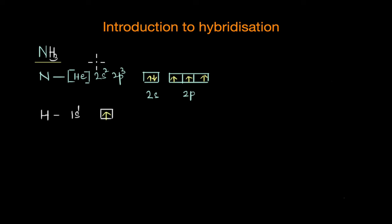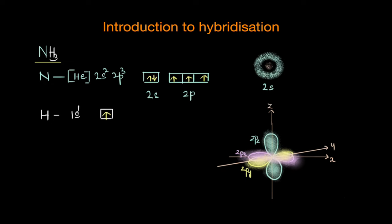Let's take the example of ammonia. In ammonia, nitrogen is the central atom and the electronic configuration of nitrogen is 1s2 2s2 2p3. In the ground state, a nitrogen atom has 5 valence electrons: 2 in the 2s orbital and 3 electrons in the 2p orbitals. The 2s and the 2p orbitals have different spatial orientations and also have different energies. The 2s orbital is spherical in shape and is uniformly spread around the nucleus, whereas the 2p orbitals are dumbbell in shape and are oriented along the x, y, and z axes.